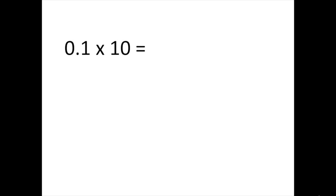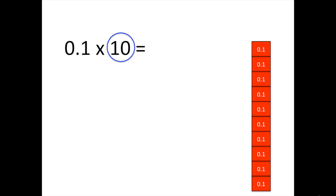Let's solve a few problems together. Copy each one into your notebook. In our first problem we are multiplying 1 tenth times 10, so the answer must be 10 times as much as 1 tenth. We have 1 tenth and we want 10 one-tenths. If we add them all up, we have 10 tenths. We know that 10 tenths simplifies to 1. So 1 tenth times 10 equals 1, or 1 is 10 times as much as 1 tenth.